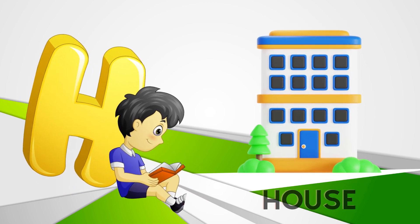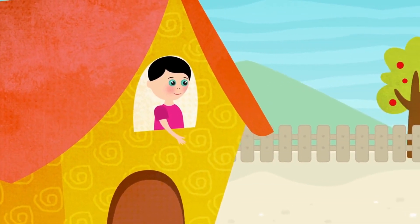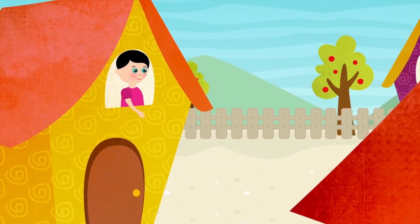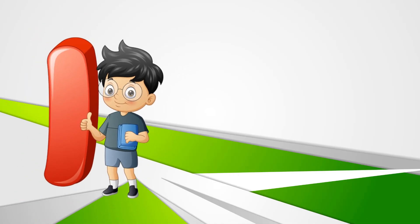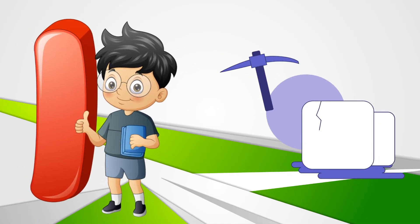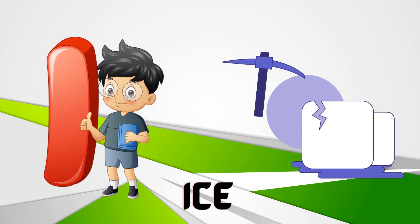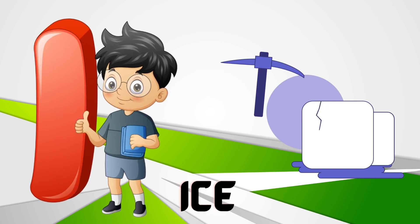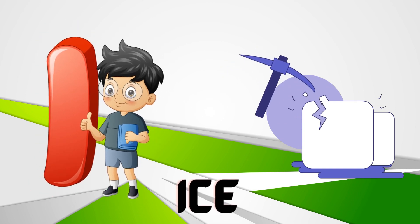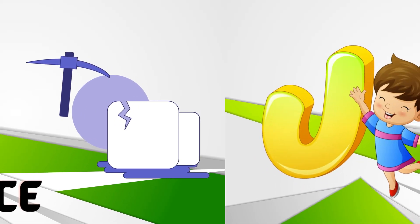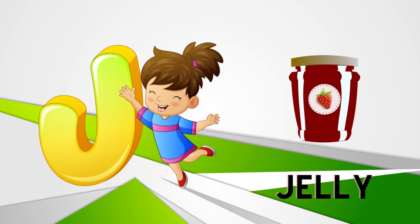Green. H is for House. House. H. I is for Ice. Ice.